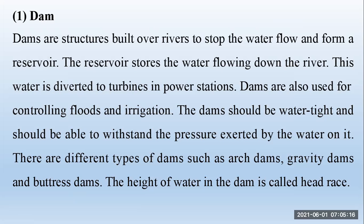The dams should be watertight and should be able to withstand the pressure exerted by the water on it. There are different types of dams such as arc dams, gravity dams, and buttress dams. The height of water in the dam is called head race.